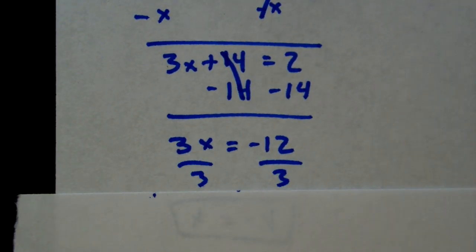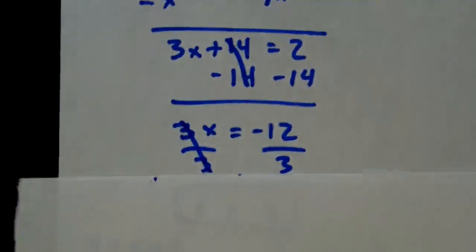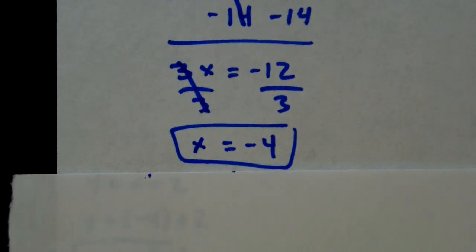Now, to get the x by itself we've got to divide by 3, which cancels this one. x equals negative 4.